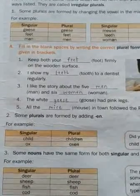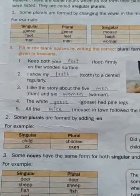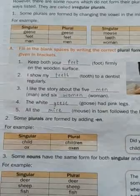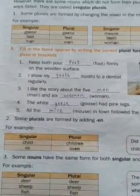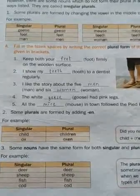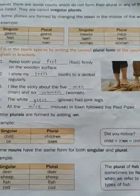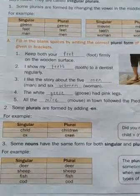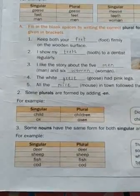The third one: 'I like the story about the five ___ man___ and six ___ woman___.' The plural of 'man' is 'men' and of 'woman' is 'women.' The fourth one: 'The white ___ goose___ had pink legs.' The plural of 'goose' is 'geese.' The fifth one: 'All the ___ mouse___ in town followed the Pied Piper.' The plural of 'mouse' is 'mice.'